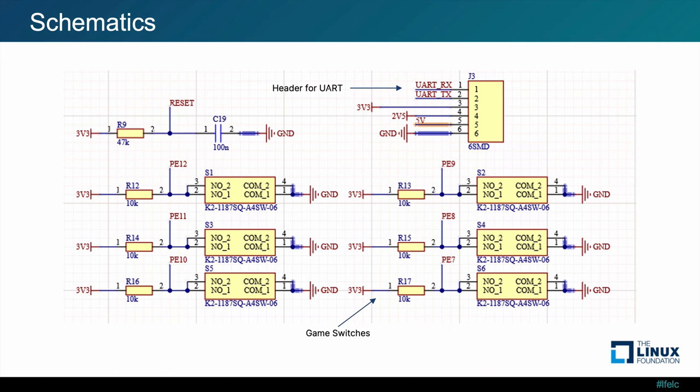Here are more component wiring schematics. I also used switches for the up, left, right, down, and A and B buttons in the game. In order to connect to the shell, I used a header pin to expose the UART connections — the UART RX and TX.